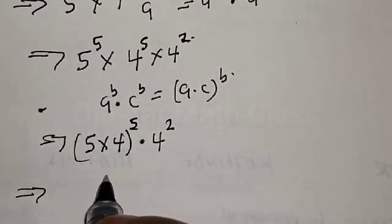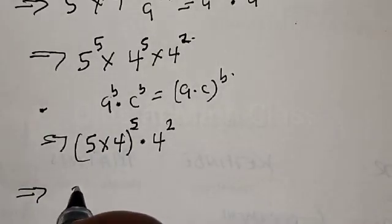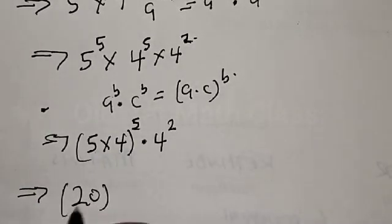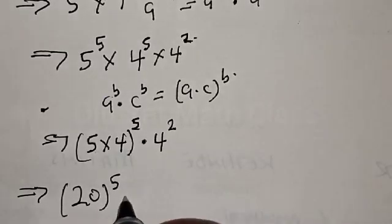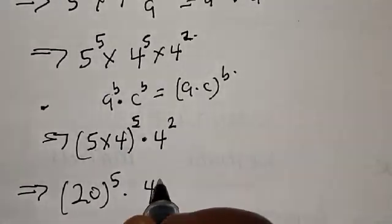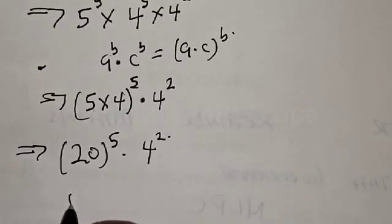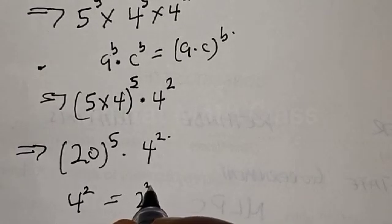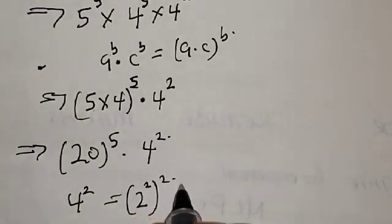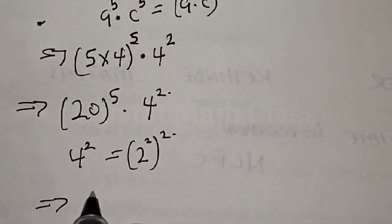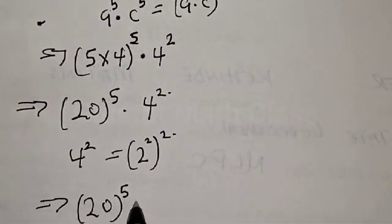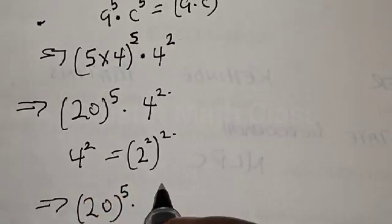This implies that 5 times 4 is 20, so we have 20 raised to power 5 multiplied by 4 squared. And 4 squared can be expressed as 2 raised to power 4, giving us 20 raised to power 5 multiplied by 2 raised to power 4.